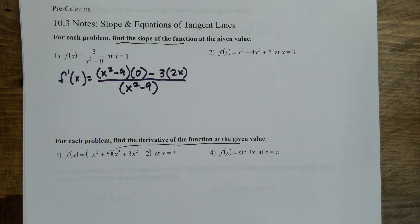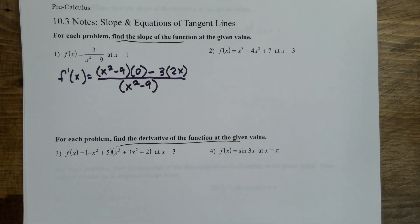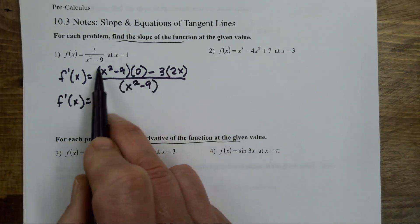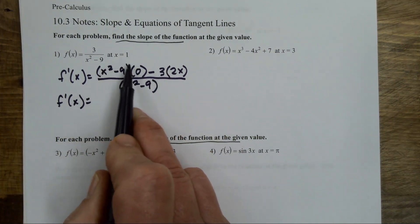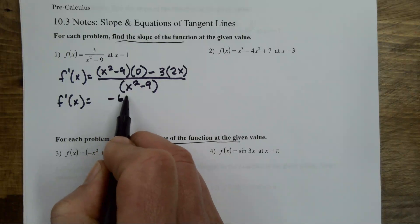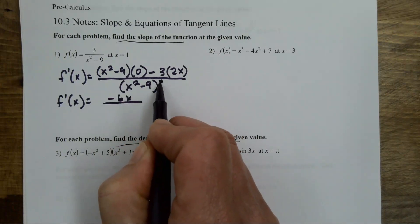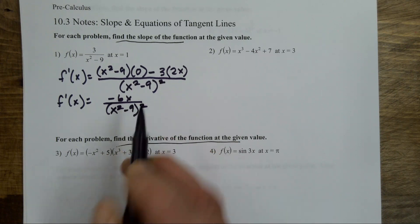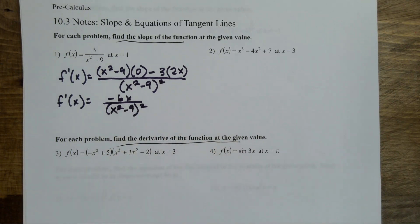Sometimes when I'm doing these problems I'll do a little bit of cleanup before I plug my value in, especially if it's easy cleanup. Other times I'll just plug my value in. I'm going to do some cleanup on this one. My first derivative then — the top becomes zero, so it's negative six x over x squared minus nine, quantity squared.